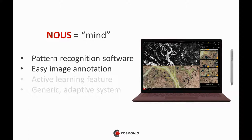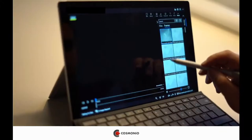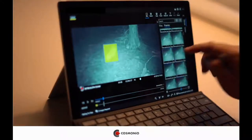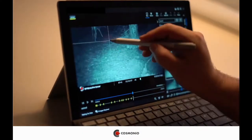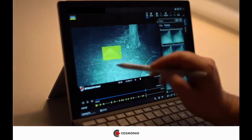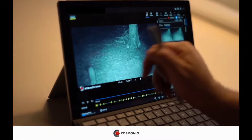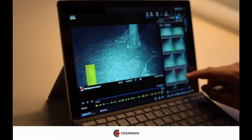NOOS is ancient Greek for mind, and that immediately covers the broad applicability of this product. NOOS consists of pattern recognition software, and the user is able to easily annotate image data on the tablet screen. The stylus is used to delineate certain regions of interest and a neural network is subsequently trained with this input. Even with a small amount of data, the network is able to predict a region of interest on new data after a few epochs.